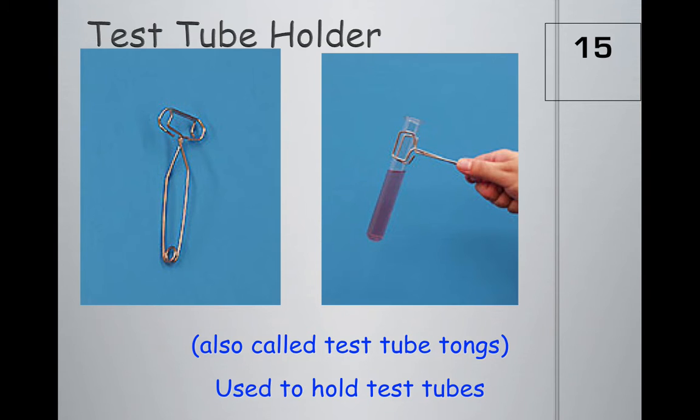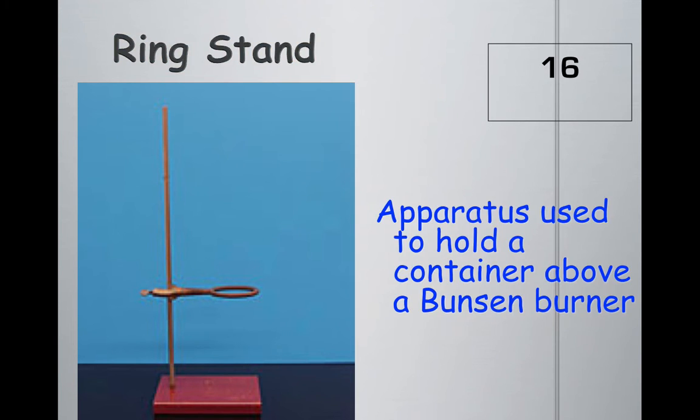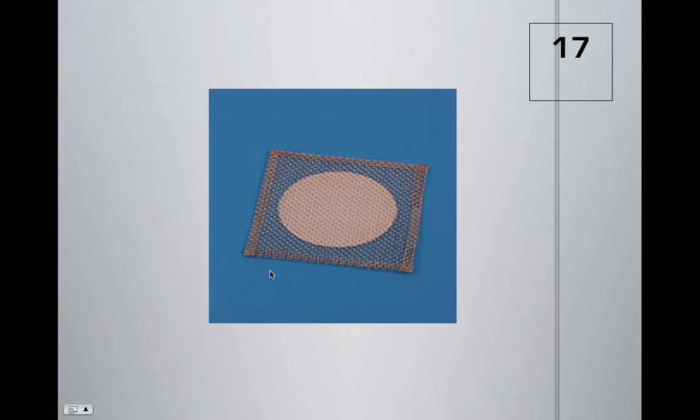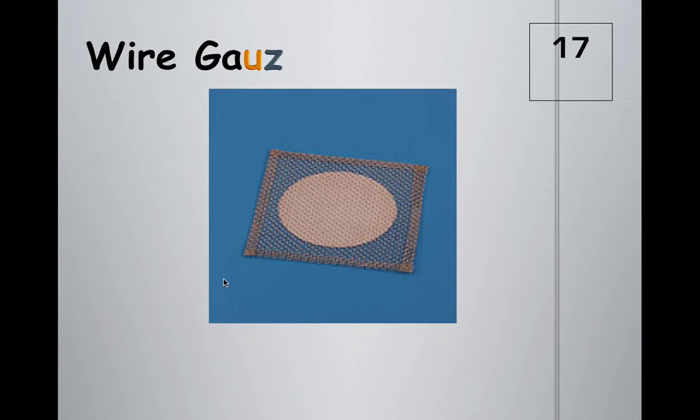This object is called a ring stand and is used to hold a container above a Bunsen burner. For example, if we had a fire source underneath the ring, we would put the object being heated right above it. This item would go on top - wire gauze - used to support a container on a ring stand.